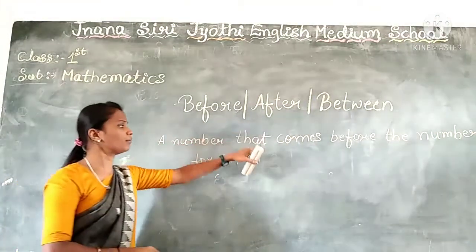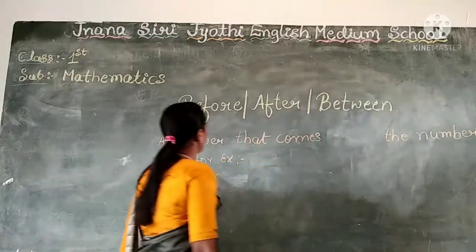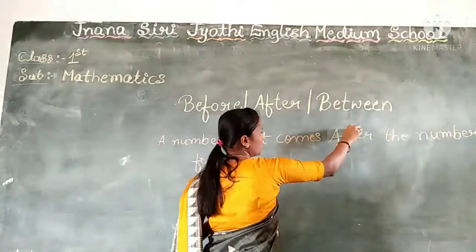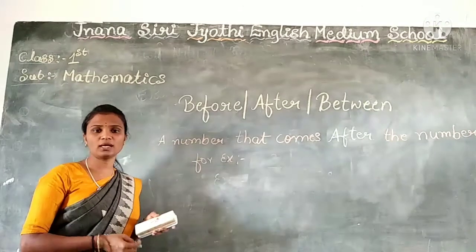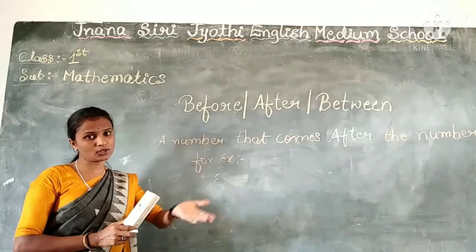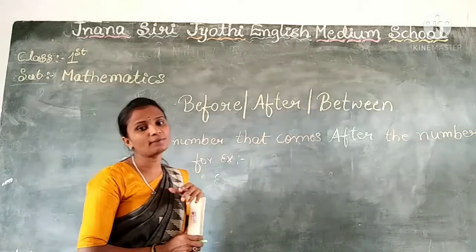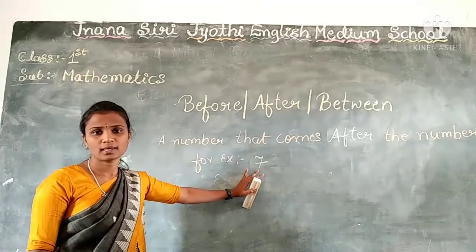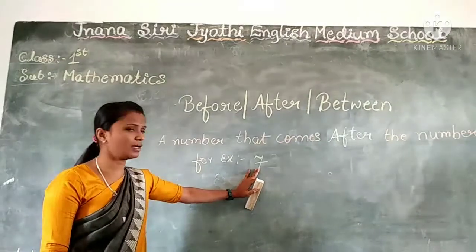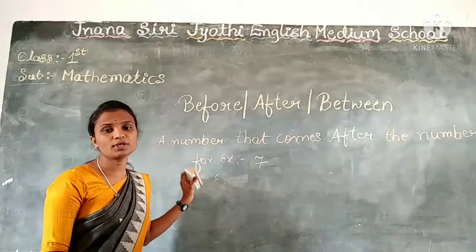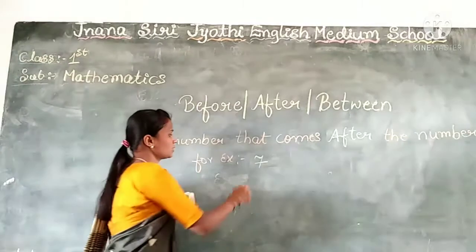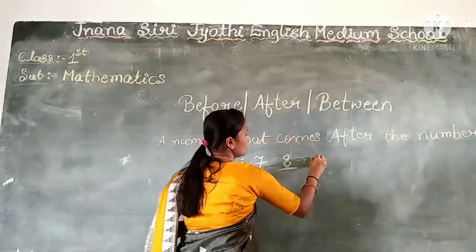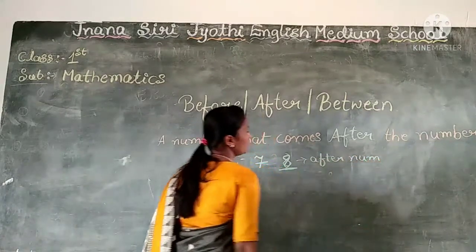Which is called the after number? The number that comes after the particular number is called the after number. For example, which number is given here? 7. Which is the after number for 7? 8. So 8 is called the after number. Right?